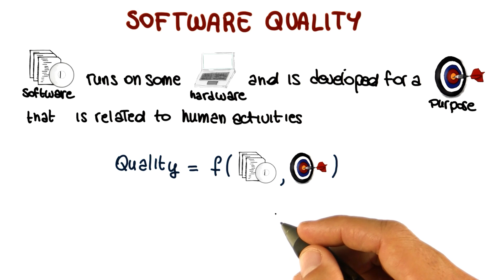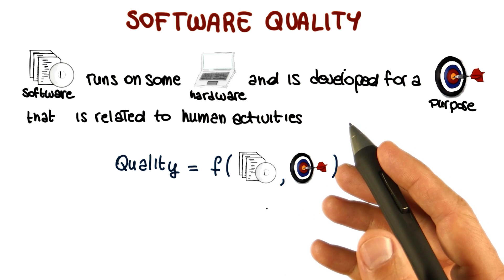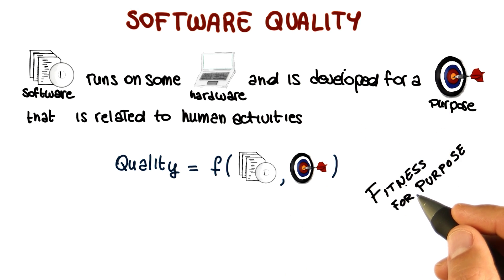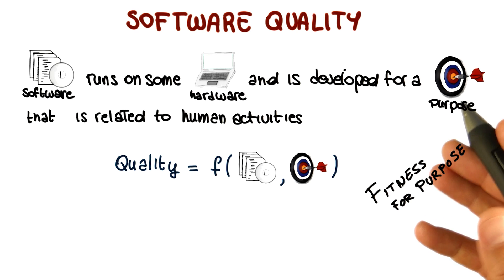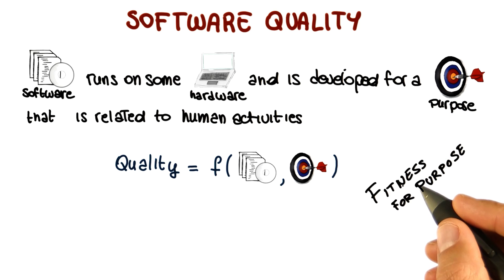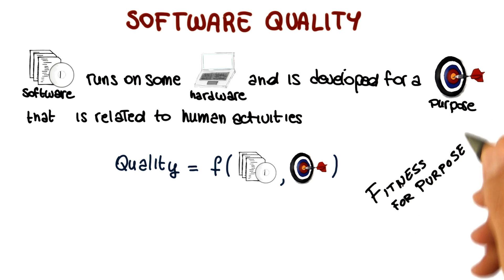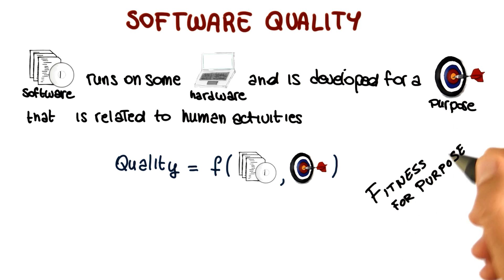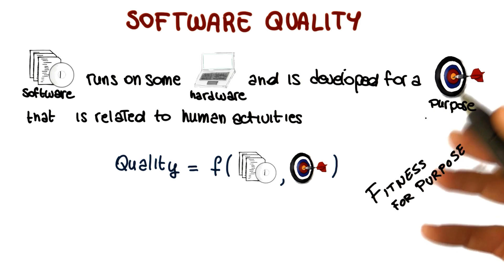Turning this around, we can therefore define the quality of software in terms of fitness for purpose. The more the software fulfills its purpose, the more the software is on target, the higher is its quality.